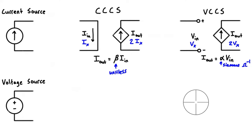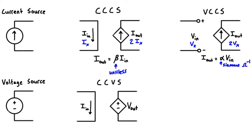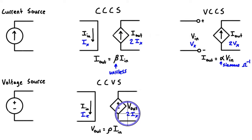We also have dependent voltage sources. The first is the current controlled voltage source (CCVS), again using the diamond shape. The voltage it puts out depends on a current somewhere else in the circuit, and we use a multiplying factor — commonly the letter rho. You might just see a current called ix, and then the dependent voltage labeled as something like 2ix. The multiplying factor here is always in units of ohms, because if you rearrange, you get voltage divided by amps — which is ohms.